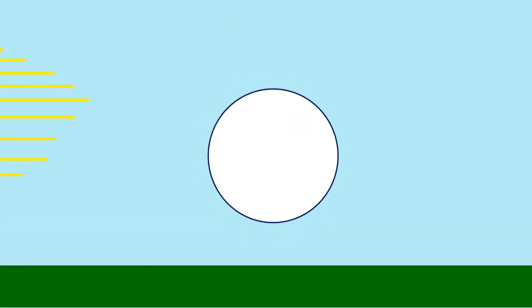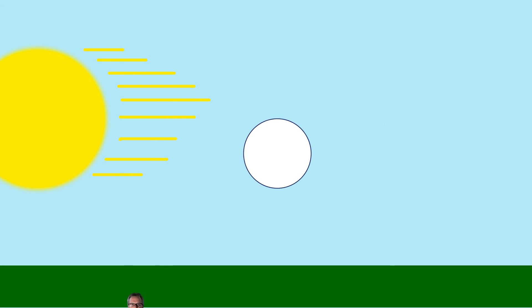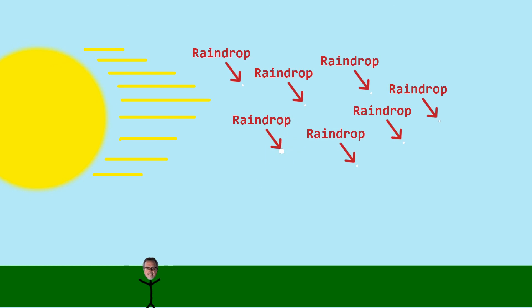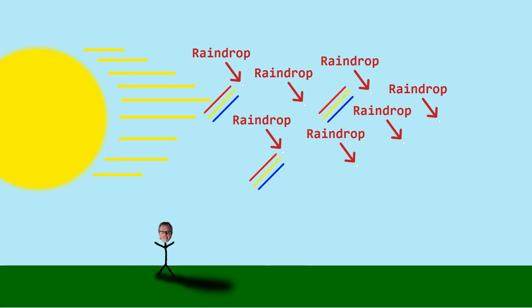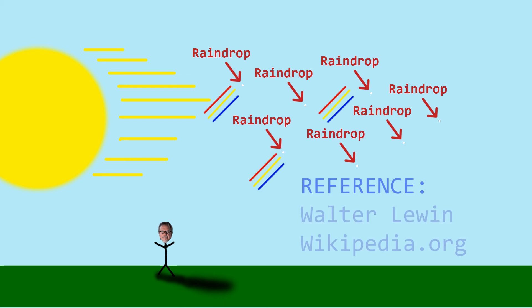This diagram explains how a rainbow is only dependent on whether there are raindrops in the air and the angle of the sun to your position and direction. The sun will be somewhat behind you and somewhat horizontal.